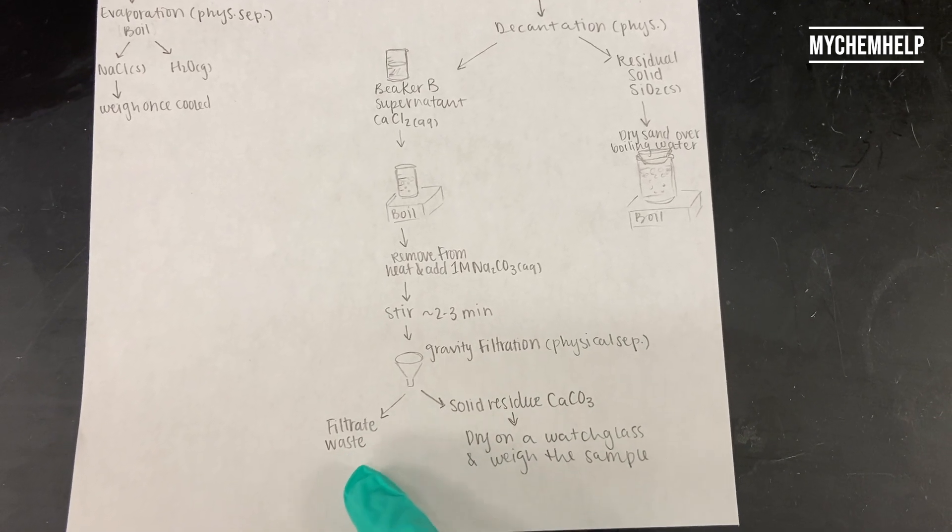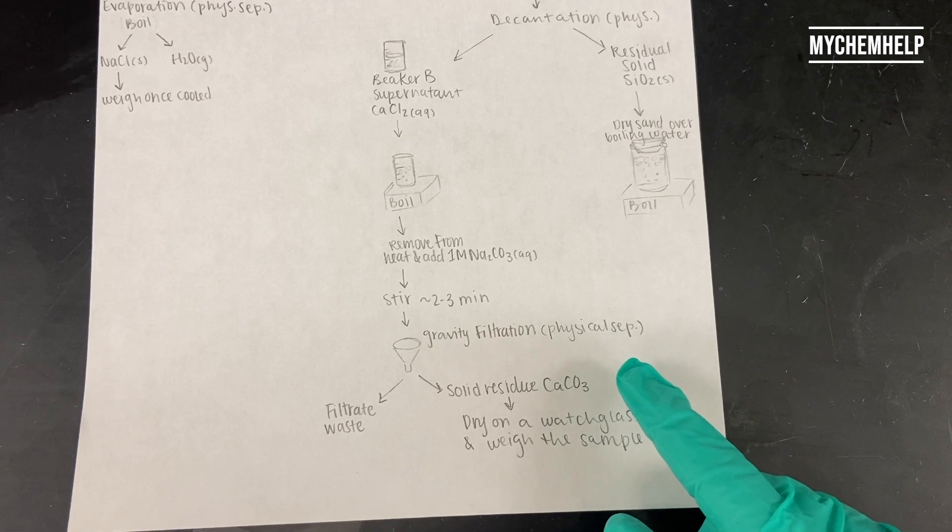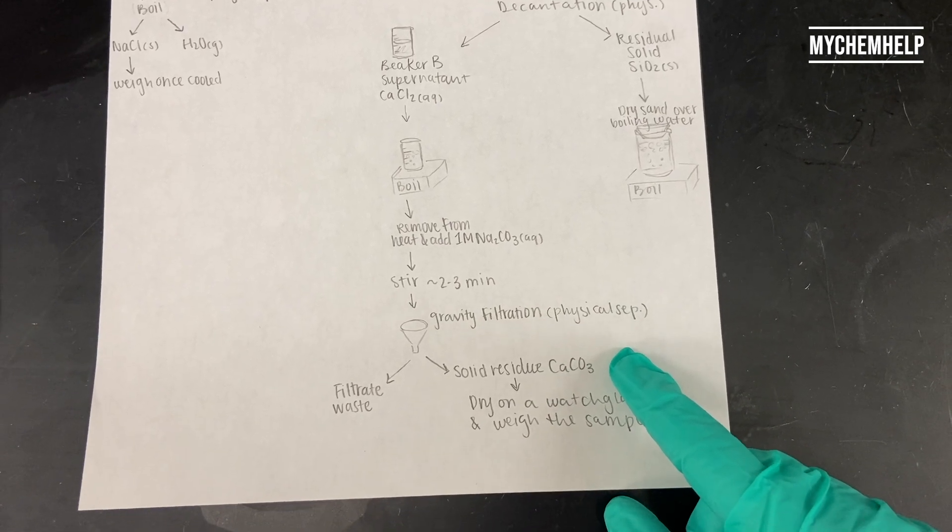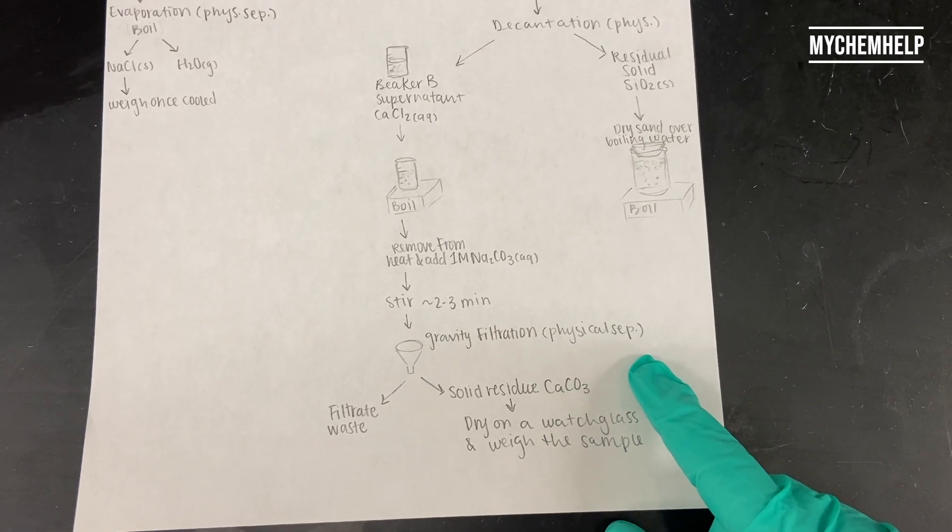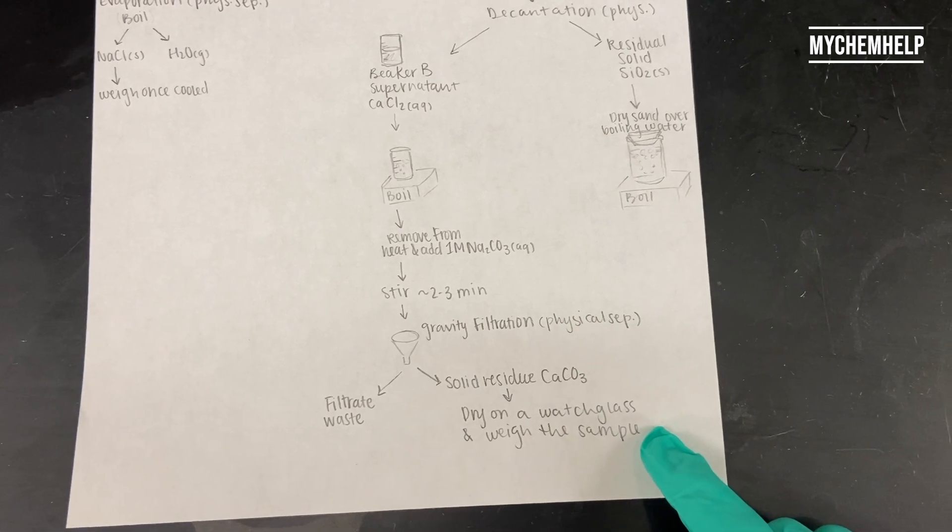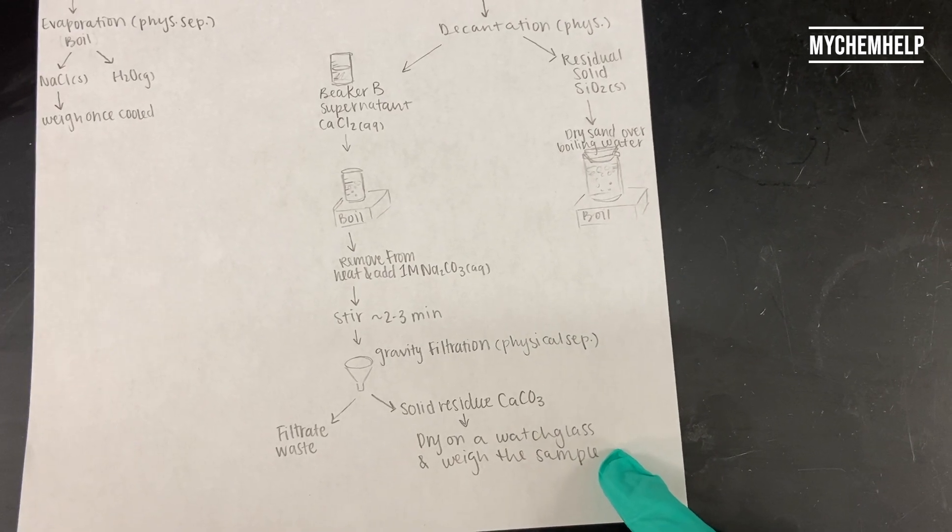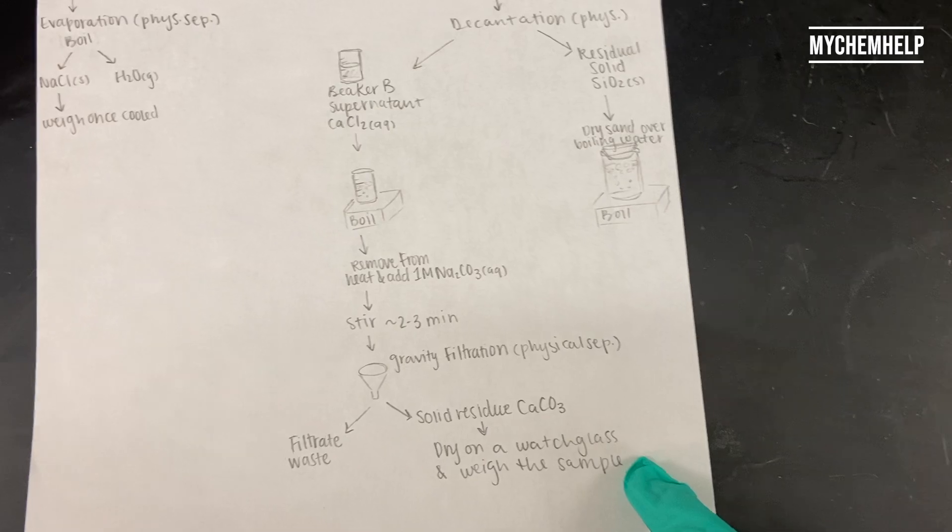The filtrate, the liquid portion, is going to be waste, and then the solid residue is going to be our calcium carbonate. We're going to transfer that onto a dry wash glass, and we're going to dry that further and weigh out the sample.